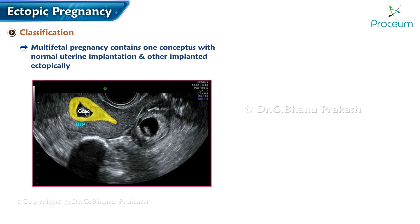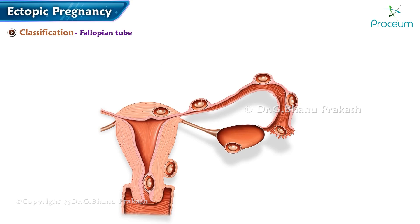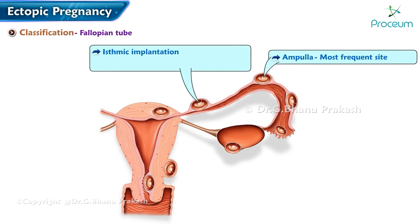A multifetal pregnancy containing one conceptus with normal uterine implantation and the other implanted ectopically is termed a heterotopic pregnancy. The ampulla is the most frequent site for implantation, making ampullary implantation the most common and earliest to rupture by six weeks.